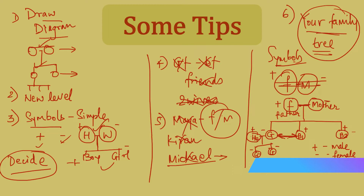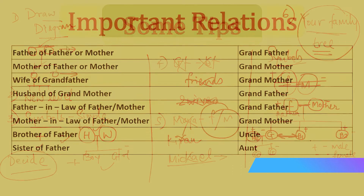Before moving to sums, let us look at a few important relations. You absolutely have to know these because unless you know them, you won't be able to solve any of the sums. Father of father or mother is grandfather. Mother of your parents is grandmother. Brother of your father is uncle. Sister of your father is aunt.